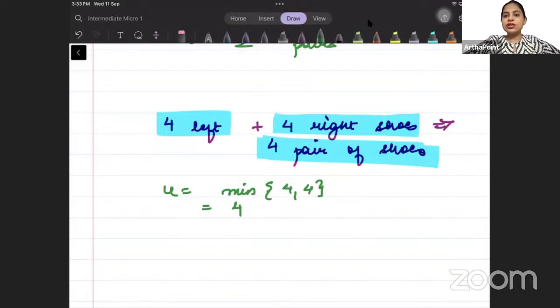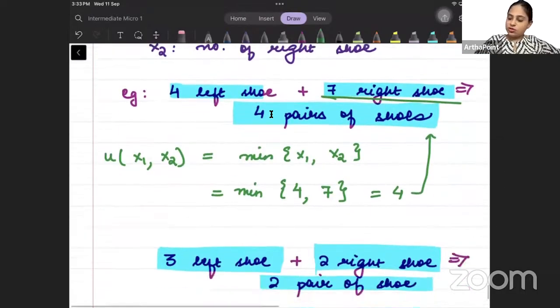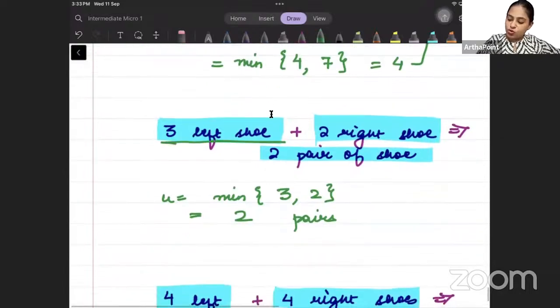This utility function is very useful. It is helping us understand how many pairs of shoes we can finally make. Whatever is minimum. Here the extra 3 right shoes were of no use. Here, extra 1 left shoe was of no use because right is only 2. So left can only be used 2. Right?